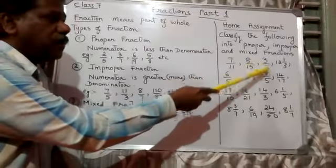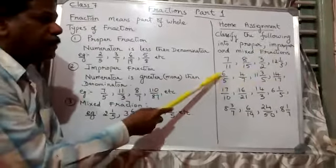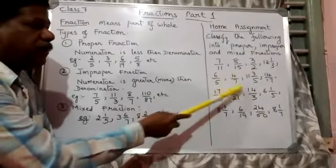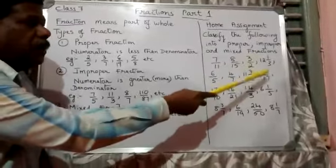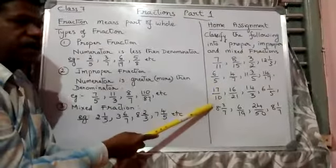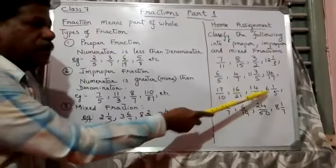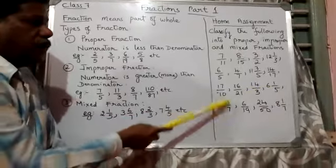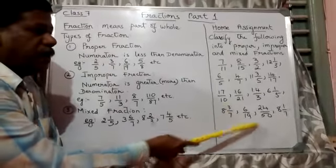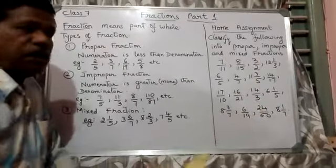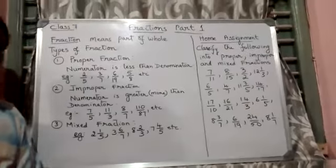7 by 11, 8 by 15, 3 by 2, 12 and 1 by 3, 6 by 5, 4 by 7, 11, 2, 3 by 5, 14 by 17, 17 by 10, 16 by 21, 14 by 3, 6 and 1 by 5, 8 and 3 by 7, 6 by 19, 24 by 50, and 8 and 1 by 7. Thank you.